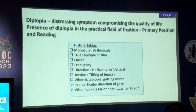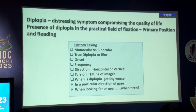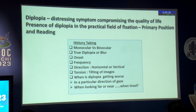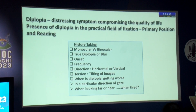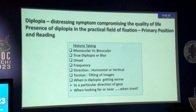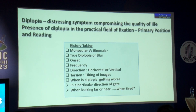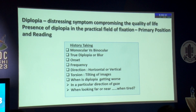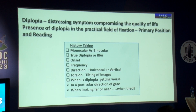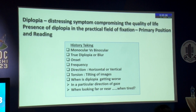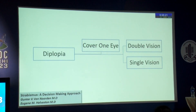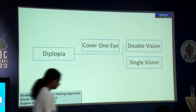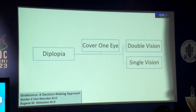You need to understand whether the patient is complaining of true diplopia or just a blur. It has to be differentiated: monocular or binocular, onset, frequency, direction — whether it is horizontal, vertical, or torsional (tilting of images). When is diplopia getting worse — in a particular direction of gaze, looking near or far, or when tired, to rule out myasthenia gravis.